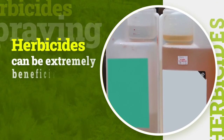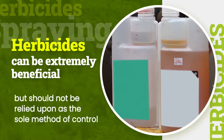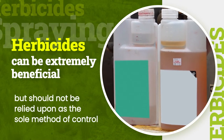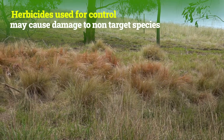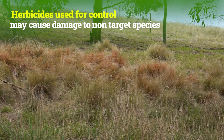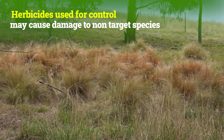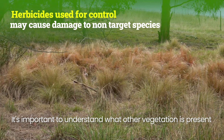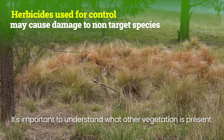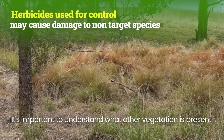Herbicides can be extremely beneficial in controlling serrated tussock. However, they should not be relied on as the sole method of control. Herbicides used for the control of serrated tussock may cause damage to non-target species including native vegetation and grasses. It's important to understand what other vegetation is present and assess the level of risk of non-target damage.